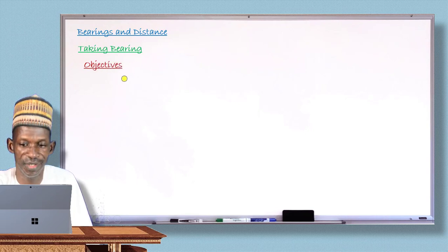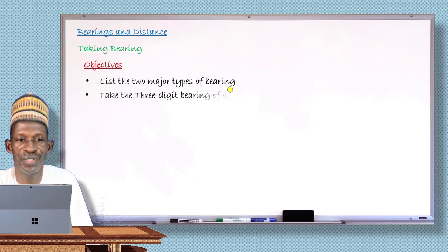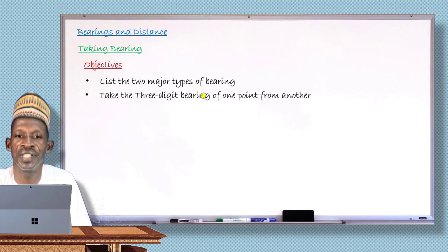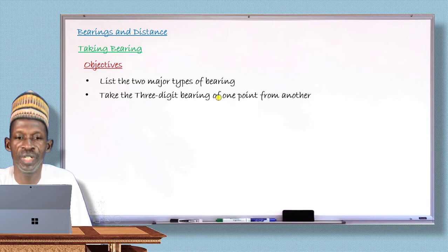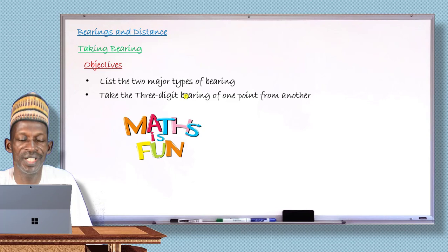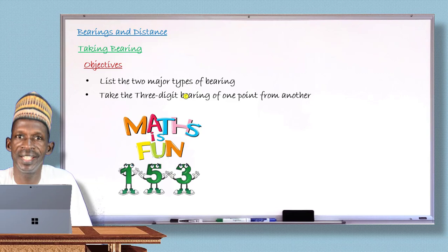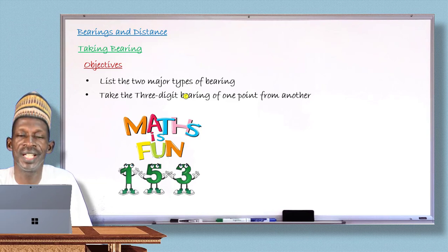After completing today's lesson, my dear students will be able to list the two major types of bearing, and number two, will be able to take the three-digit bearing of one point from another. These are the things I hope my dear students will be able to do after completing the lesson today. As part of today's lesson, I'll give you an interesting number: 153. It's so special, so amazing — I'll tell you what makes it interesting after completing my lesson today, so stay with me.